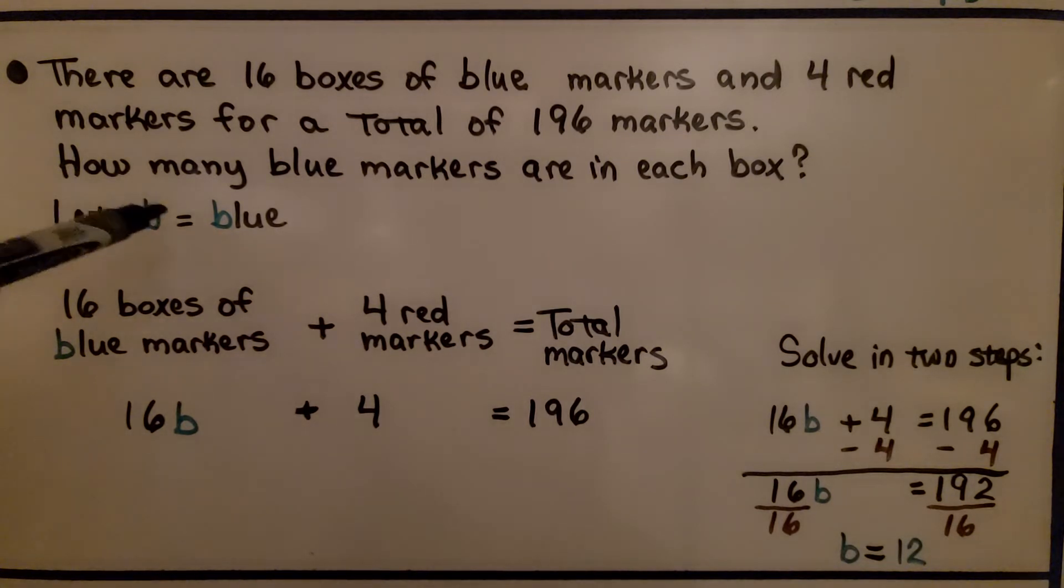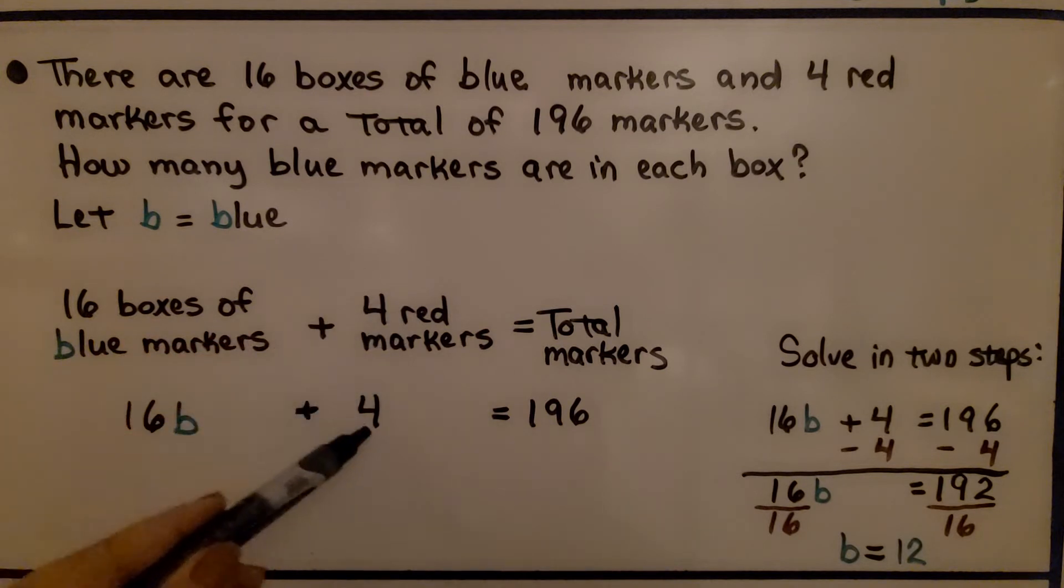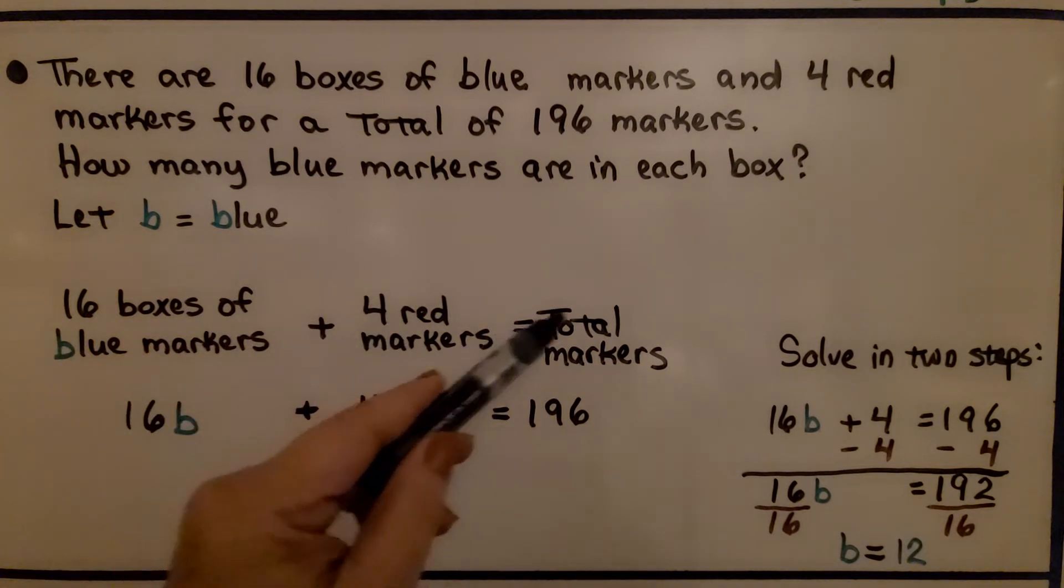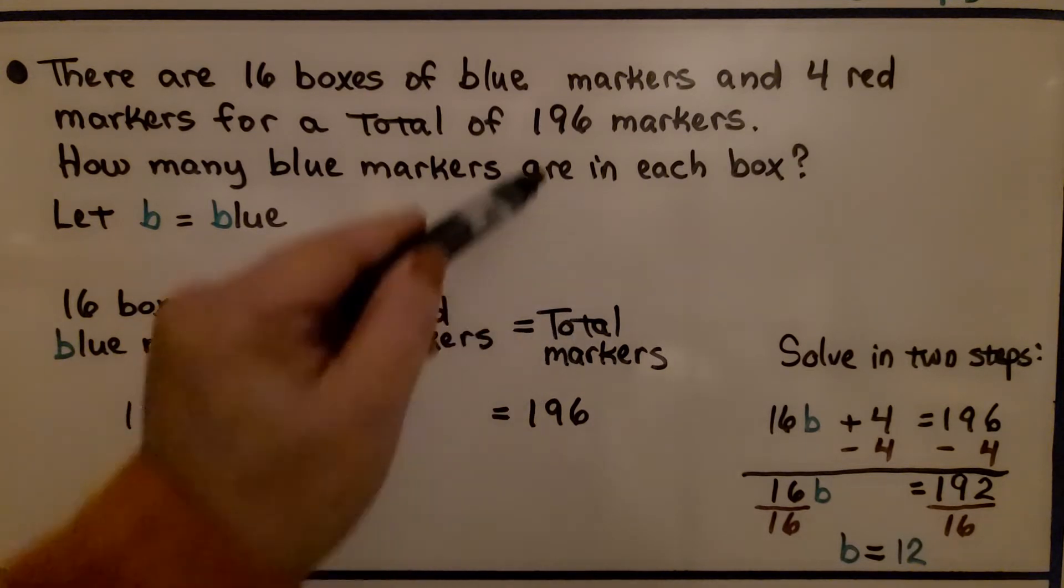So how many blue markers are in each box? We're going to let b equal blue for blue markers. We have 16 boxes of blue markers. So we're going to have 16b, 16 times however many in the box, plus the 4 red markers. So we have plus 4. And it equals the total number of markers, the 196.